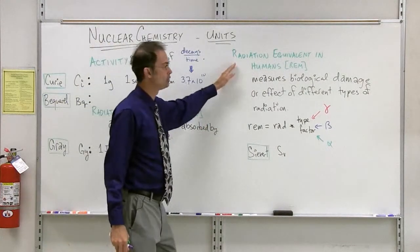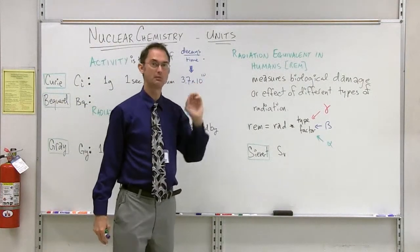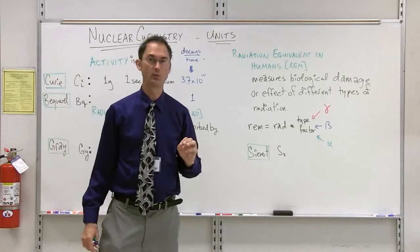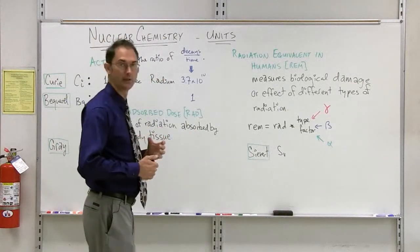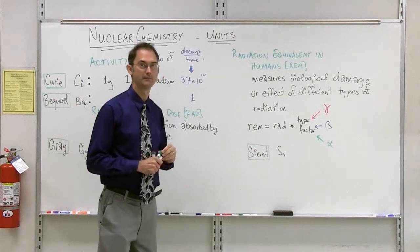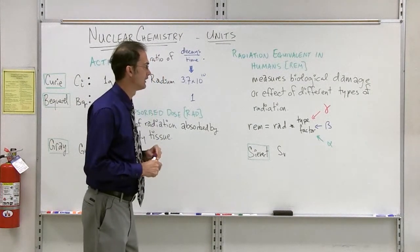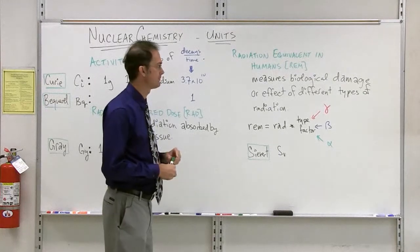The radiation equivalent in humans is the REM, which is probably the most common way of expressing nuclear effect on humans. And we will get to this later on, especially as it relates to health, and working with a Geiger counter, for example.